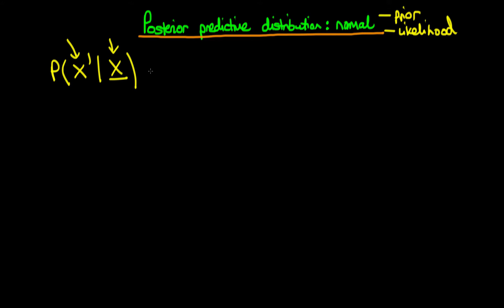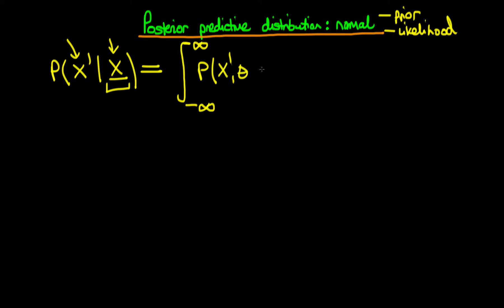We note that this is basically just a marginal distribution whereby we've integrated out all theta dependence, although it's a little bit more complicated because we've got this conditioning on x, our vector of observations. All we have to do is integrate theta from minus infinity to plus infinity of the joint density of x-primed and theta, given that we have observed our vector observations x, integrated over choice of theta.